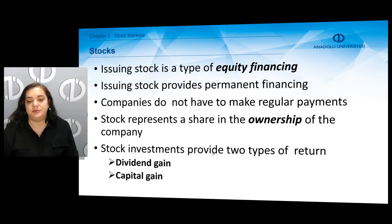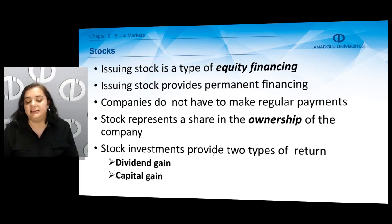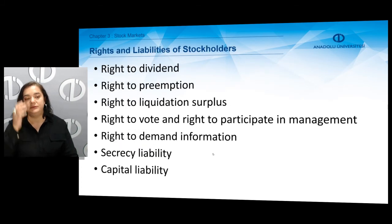Stock investments provide two types of return: dividend gain and capital gain. Capital gain stems from the price appreciation, whereas dividend gain can arise because as companies make profits, they may decide to distribute some of their profits in the form of dividends to their stockholders or shareholders.